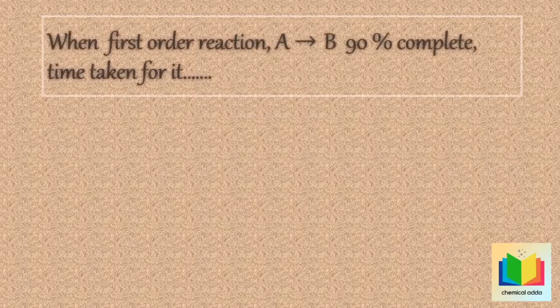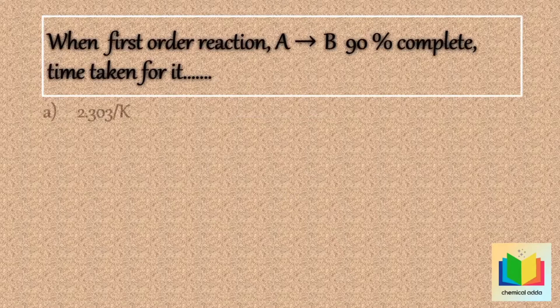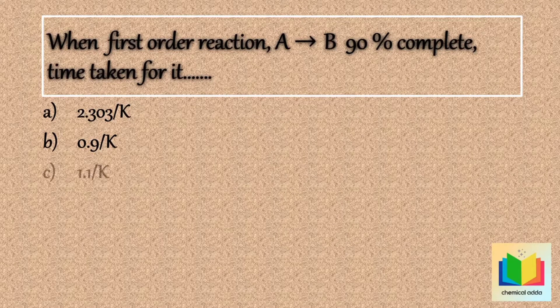First question: when a first order reaction A gives B is 90% complete, what is the time taken? Options are: option A — 2.303 divided by k; option B — 0.9 divided by k; option C — 1.1 divided by k; option D — 1.1k.